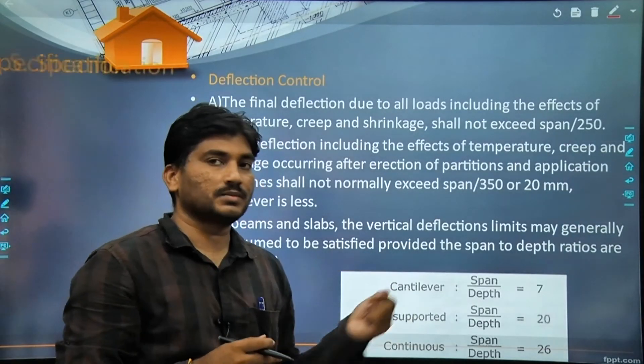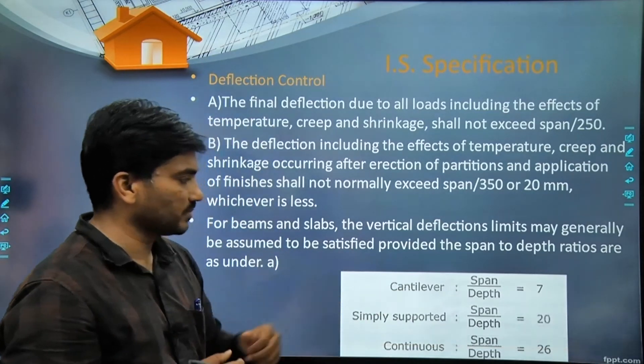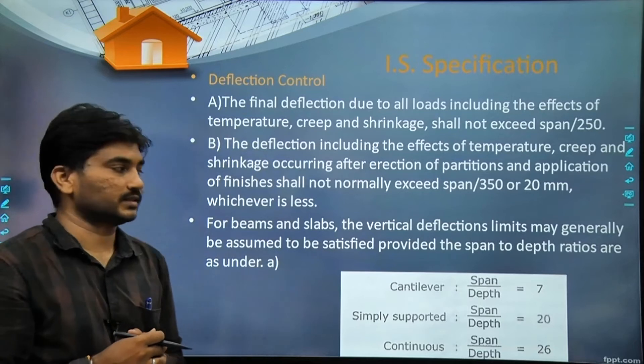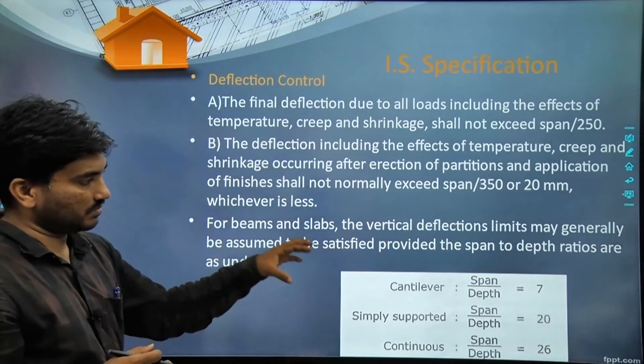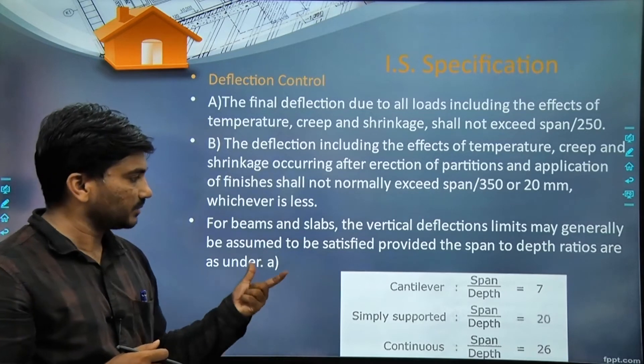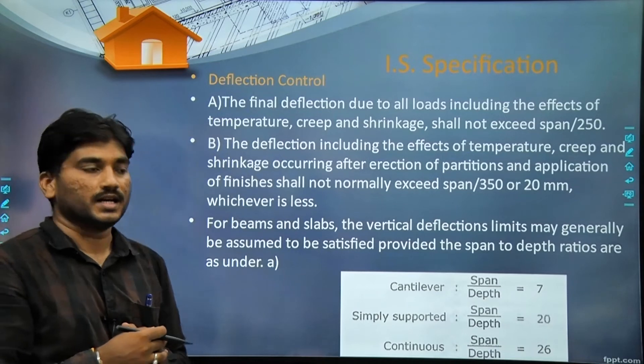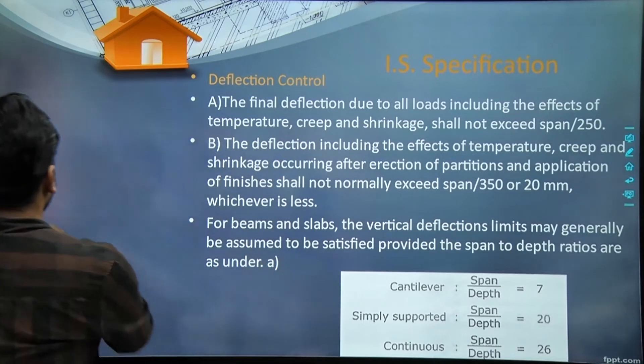Similarly for simply supported beam, the value given is 20, and if it's a continuous beam then the value is 26. We have to keep this in mind and we will see in detail later why cantilever is given less, simply supported is 20 in the middle, and continuous is given the highest value of 26.